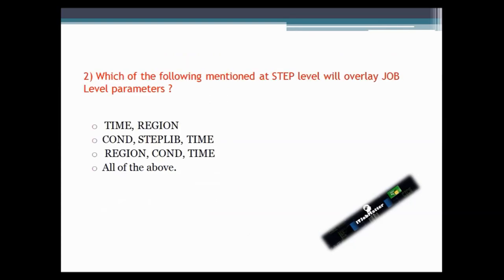The second question asks which of the following parameters mentioned at the step label will overlay job label parameters. The answer is the TIME and REGION parameters. The COND parameter cannot fall in that category because if you mention the COND parameter at both job label and step label, and the one specified at job label becomes true, that step will not get executed — meaning the COND parameter at step label gets ignored straightforward.